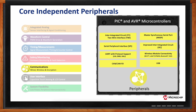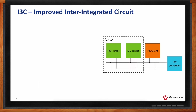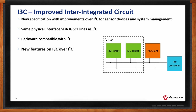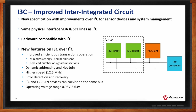I3C, or improved inter-integrated circuit, offers a new specification with improvements over traditional I2C for sensor devices and system management. It provides higher speeds, more error detection and recovery, and compatibility with traditional networks. A major benefit for low power applications is the operating voltage range: these devices can operate between 3.63 volts on the high end and all the way down to 0.95 volts, which significantly helps with power consumption.